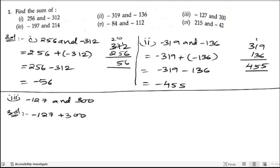So 300 minus 127. We will borrow 1 from 3, then next it becomes 10. So now again 1. So 10 minus 7 is 3, 9 minus 2 is 7 and 2 minus 1 is 1. So we got 173.